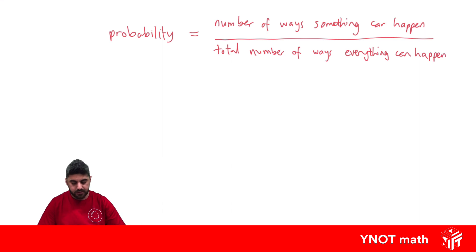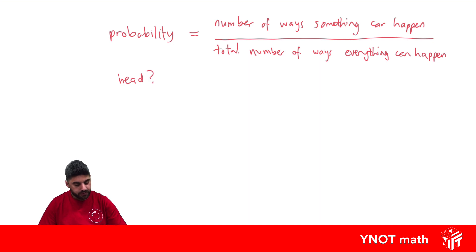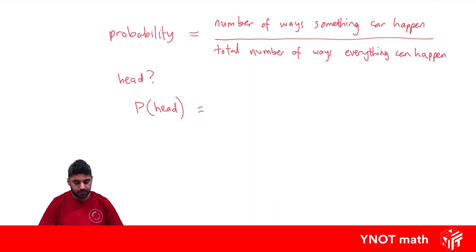Let's use our coin example. What's the probability of getting a head when we flip a coin? First, let's learn how to write our probabilities. We can write it as P of a head, which just means the probability of getting a head when we flip a coin.